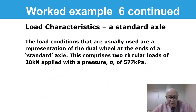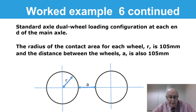To remind you what the standard axle is: the load conditions usually used are the dual wheel at the end of a standard axle. This comprises two circular loads of 20 kilonewtons, so it's an 80 kilonewton axle applied with a pressure of 577 kilopascals. With the standard axle load, the radius of the contact area for each wheel is 105 millimeters, and by coincidence, the distance between the wheels for this particular axle is also 105 millimeters. These are the input data to the multilayer elastic theory.